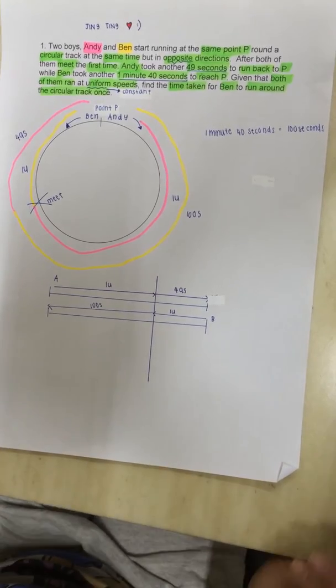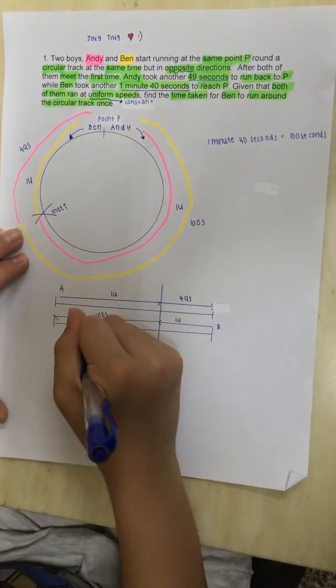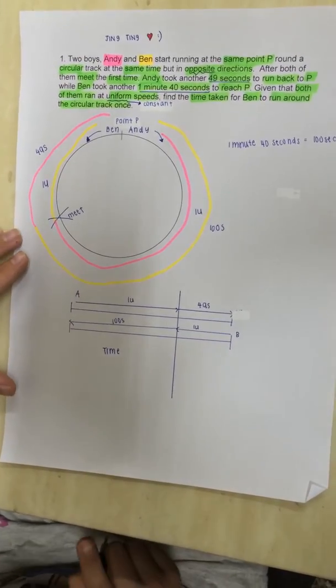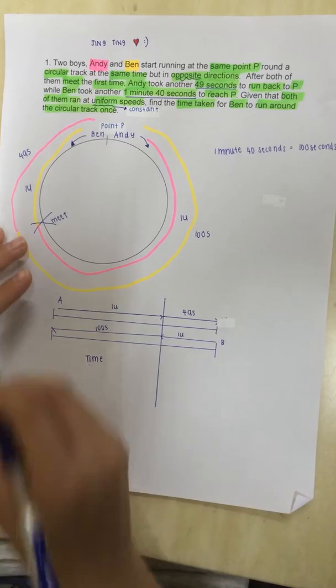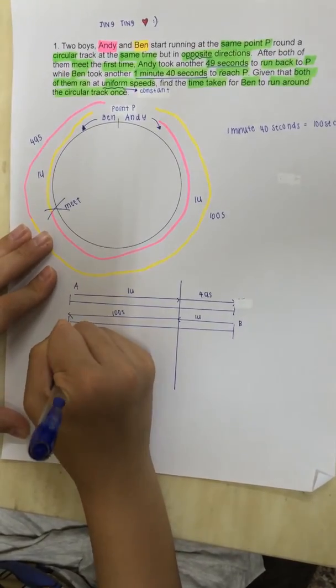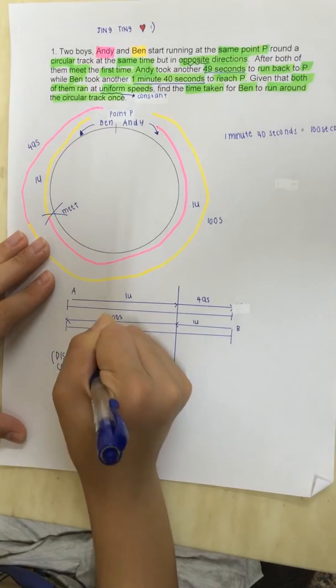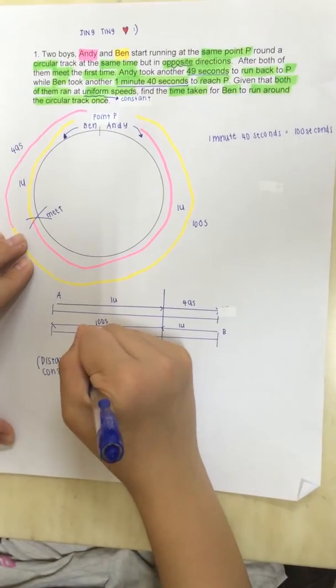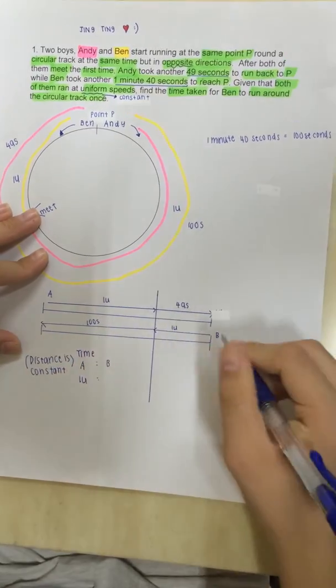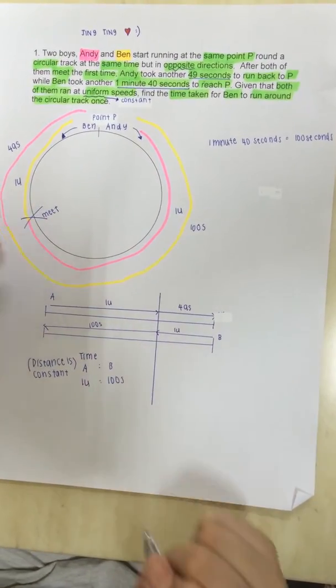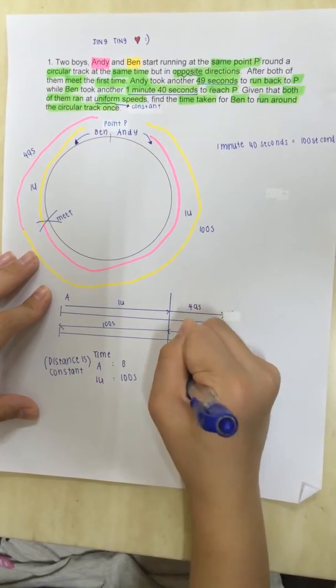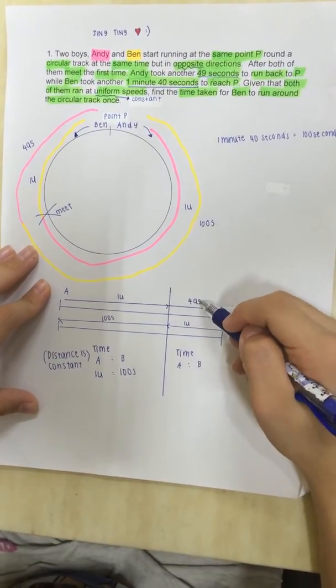Now, how we continue with the solution is to find the ratio of time. Well, to find the ratio of time, the distance must be constant in order to compare the time. So, the distance is constant. So, now, we will be comparing Andy is to Ben in this. So, Andy is 1 unit. And, Ben is 100 seconds. Now, the time for this, as they are saying distance, so we can compare. So, the time is A is to B, which is 49 seconds is to 1 unit.